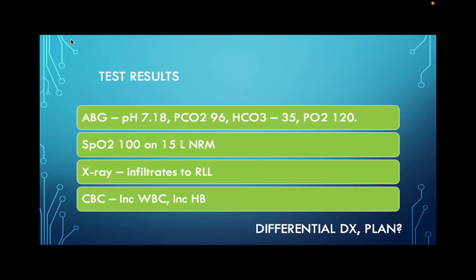Her sats are 100% on 15 liters non-rebreather. You've got infiltrates in the right lower lobe, and your CBC shows a high white count and a high hemoglobin. What is wrong with this patient? Differential diagnosis? COVID test came back negative.